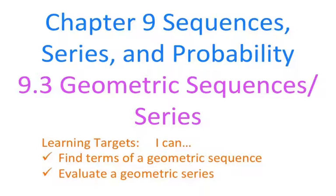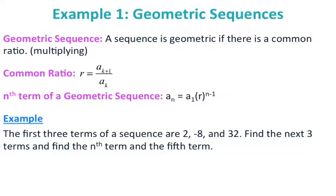We talked about arithmetic sequences and series where you were adding to find next terms. Geometric sequences are sequences where there is a common ratio, which is found by multiplication. Anytime you're adding or subtracting for a sequence, that's arithmetic; if you are multiplying, it is geometric.